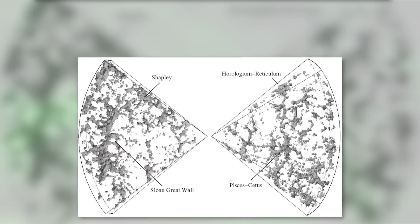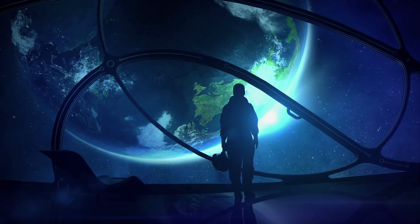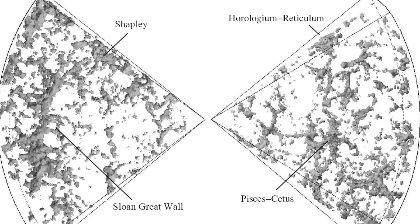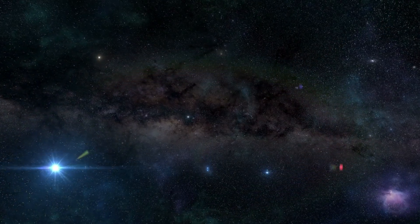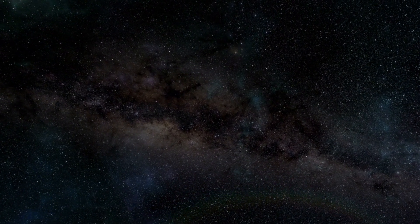The structure, which is made up of countless individual galaxies, is located about 1 billion light years away from the Earth and is 1.38 billion light years long. With these gigantic dimensions, the Sloan Great Wall makes up about 5% of the diameter of the universe visible to us.